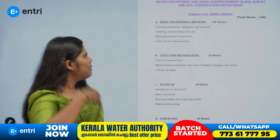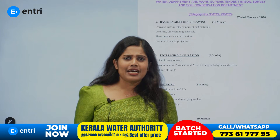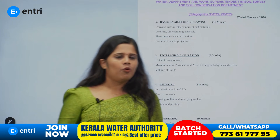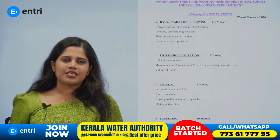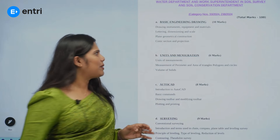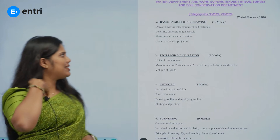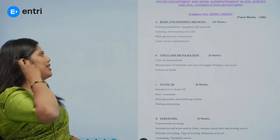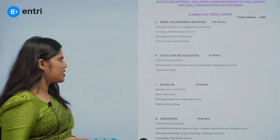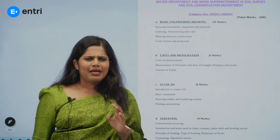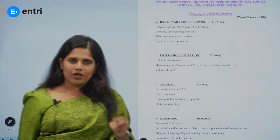First, we have Basic Engineering Drawing. We have to study the topics here: drawing instruments, equipment, materials, lettering, dimensioning, scale, plane geometrical construction, conic section, and projection. Basically, we have to study Basic Engineering Drawing at the ITA level.